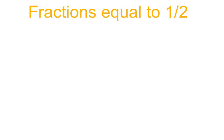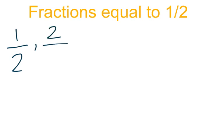Let's start by brainstorming fractions that are equal to 1 half. 1 half is written with a numerator of 1 and a denominator of 2. Next, the numerator should be 2, and remember, my denominator should always be double the numerator. So, if I double 2, that would be 4.